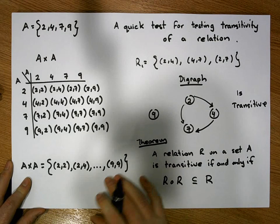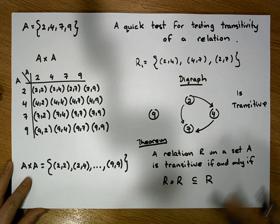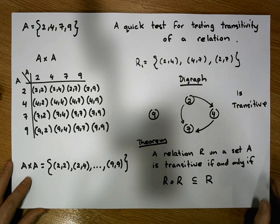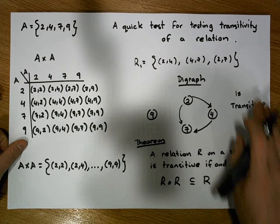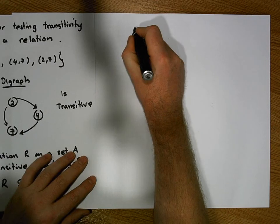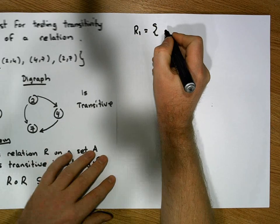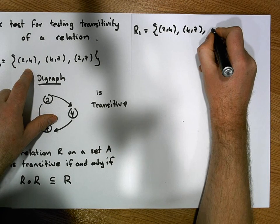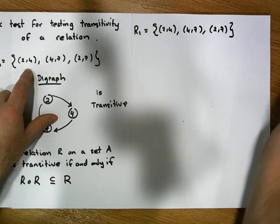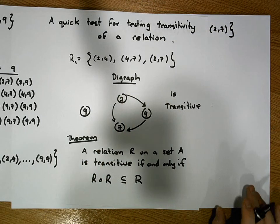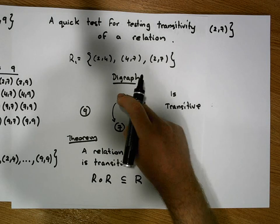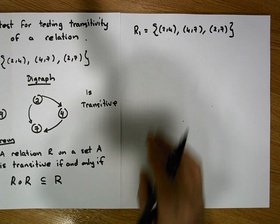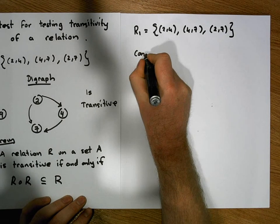In a later video we'll look at a proof of this theorem, but for this video we're going to rely on it to help us test for transitivity. So R1 is the relation containing ordered pairs (2,4), (4,7), and (2,7). We know it's transitive because we've inspected the digraph — for every double hop, we can go from source directly to destination. But from an algebraic perspective, let's verify this.